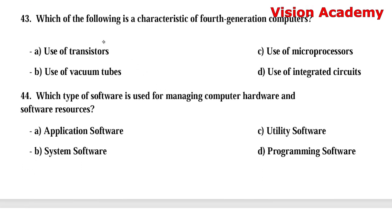Question 43: Which of the following is a characteristic of fourth generation computers? Option A: use of transistors. Option B: use of vacuum tubes. Option C: use of microprocessors. Option D: use of integrated circuits. The right answer is Option C, use of microprocessors.